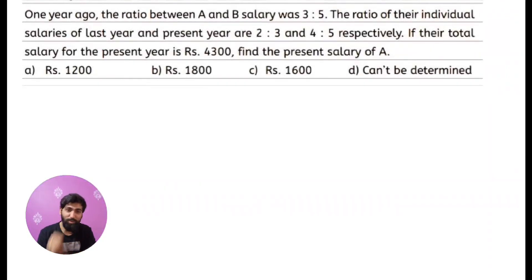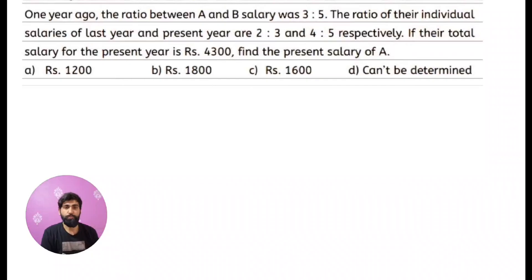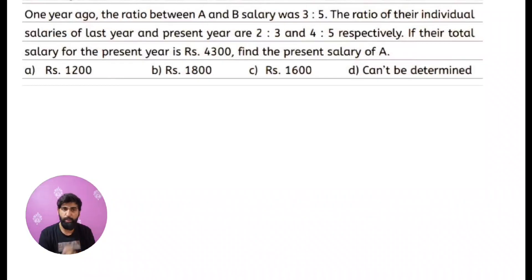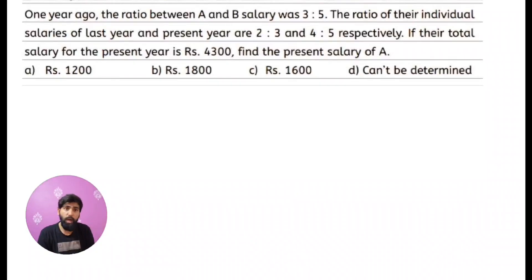Hello, my dear friends! Welcome to this video. We are going to discuss a good ratio problem. One year ago, the ratio between A and B's salary was 3:5. The ratio of individual salary from last year to present year is 2:3 and 4:5 respectively. If the total salary for the present year is ₹4300, find the present salary.